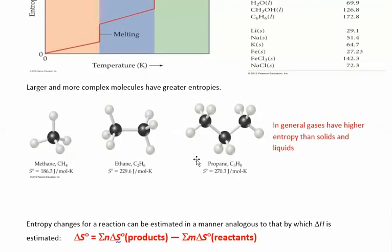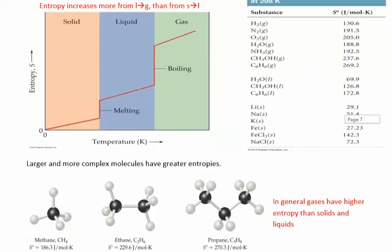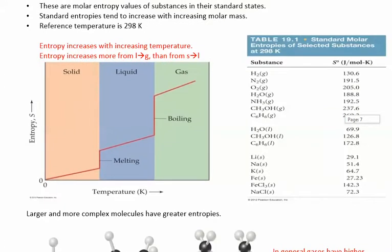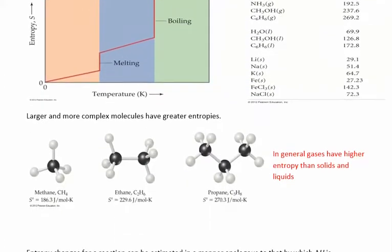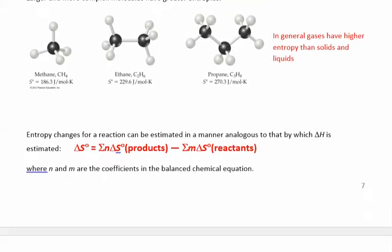Large or more complex molecules are going to have greater entropy. As long as you're looking at things in the same phase of matter — these are all gases: propane, ethane, and methane — propane is going to have the highest amount of entropy because it has more bonds that can rotate and vibrate.